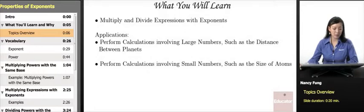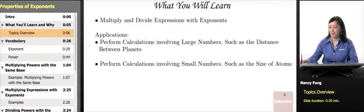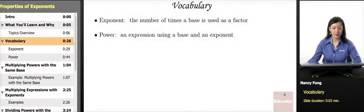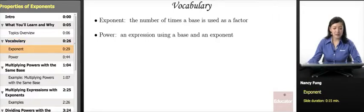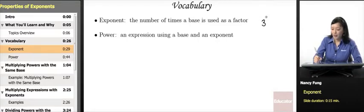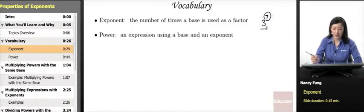You might also perform calculations involving very small numbers, such as finding the size of atoms. Let's review the vocabulary. An exponent is the number of times a base is used as a factor. So in 3 to the 7th power, the 7 is your exponent and the 3 is your base.